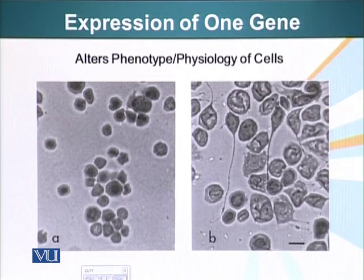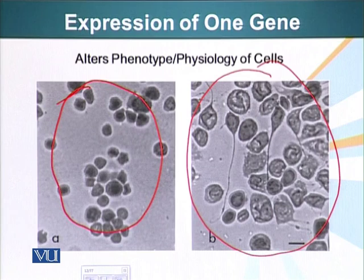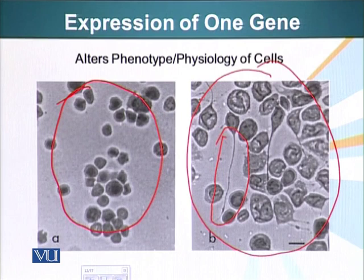Here is a graphic example on the screen. These are insect ovarian cells with a spherical shape. The cells on the other side are also insect ovarian cells, but the only difference is that these cells are expressing one special protein called tau. This protein bundles microtubules, allowing the cells to form long axon-like filaments. So this is a graphic example of what one protein can do to the shape of a cell. Not all proteins change the shape, but the biochemical or physiological properties of cells can also be changed drastically just by the expression of one protein.